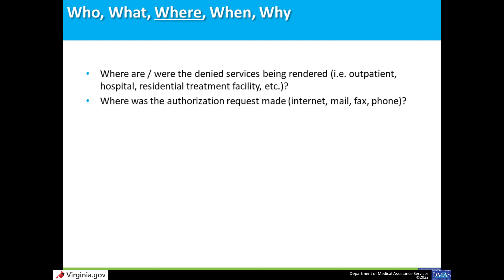Where were the denied services rendered? This affects the authority that applies to the appeal. Locations can include outpatient treatment facilities, a hospital, or a residential treatment facility. Where was the authorization request made? Was it submitted to the PRSS portal, via mail, via fax, or via phone?